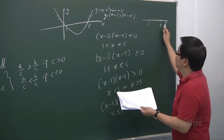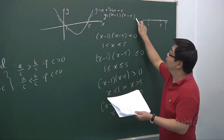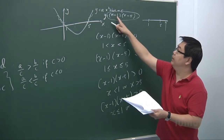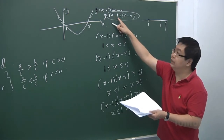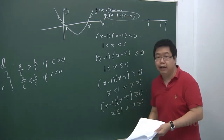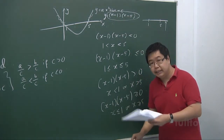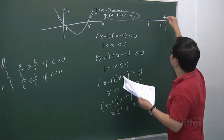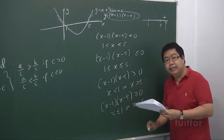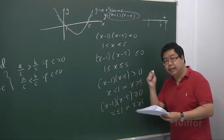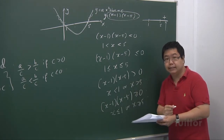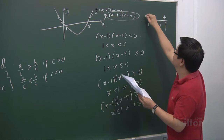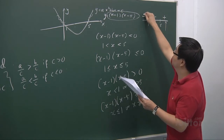I substitute x = 10 into the expression. I get 10 minus 1, which is 9, and 10 minus 5 is 5. So 9 times 5 is positive. I put a positive sign in that region, indicating the curve is above the x-axis. Likewise, the middle region will be negative and the leftmost region positive.